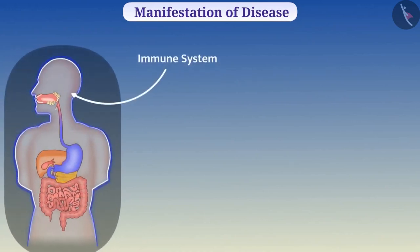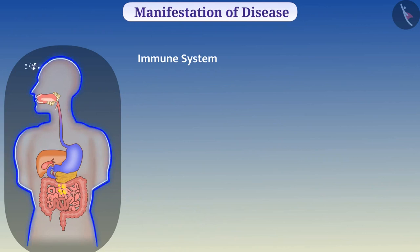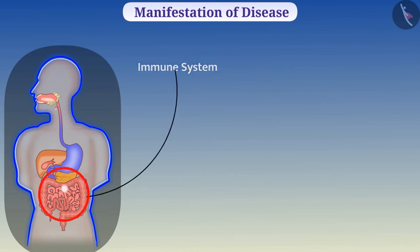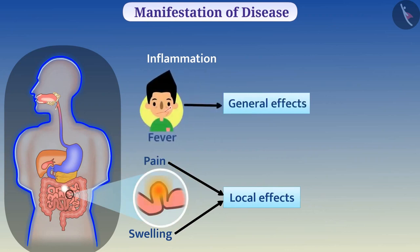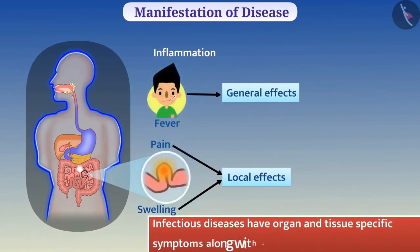The immune system in our body protects us from diseases. When an infection occurs, the immune system becomes active and forms various cells. These cells migrate to the affected organs or tissue and kill microorganisms. This process is called inflammation. Due to inflammation, local effects such as swelling and pain, and general effects such as fever, occur. Therefore, infectious diseases have organ and tissue specific symptoms along with other common symptoms.